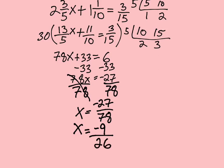Because 27 divided by 3 is 9, 78 divided by 3 is 26. And that is as simplified as it gets. So our answer is negative 9 over 26. And that's it.